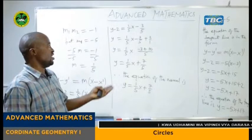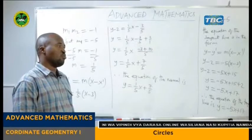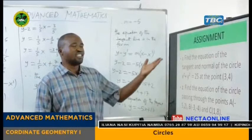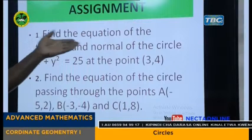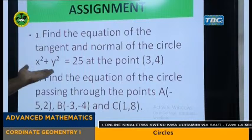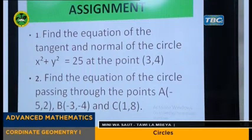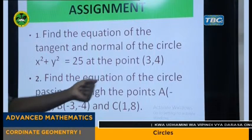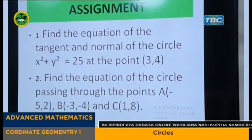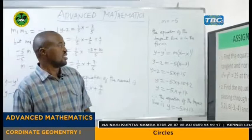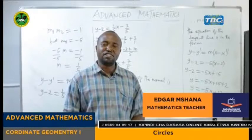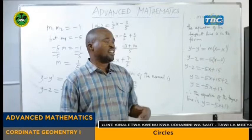So you can see how it is very easy to find the equation of the tangent and also the equation of the normal. So my dear students, here there is an assignment for you. The first is to find the equation of the tangent and the normal of the circle x squared plus y squared equals 25 at the coordinate (3, 4). And the second is to find the equation of the circle passing through the points A, B, and C. Try your level best to manage these questions. Thank you very much for your participation. Make sure you don't miss the next lesson of Advanced Mathematics. Thank you very much and welcome again.